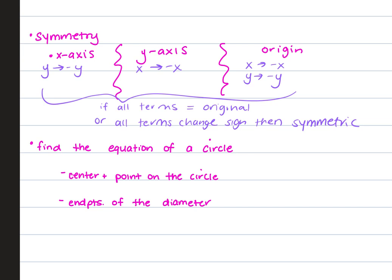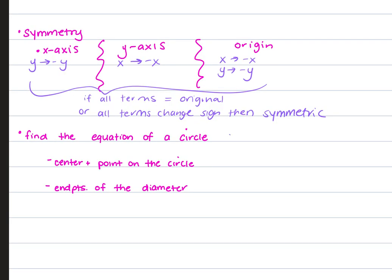So your x intercepts, we plug 0 in for y. And your y intercepts, we plug 0 in for x. Make sure these are in coordinate point form. You're not listing these. These need to be in coordinate point form. Then came symmetry. So to test for x-axis symmetry, we make y negative y. For y-axis symmetry, we make x negative x. And for origin, we change both. x becomes negative x, y becomes negative y. We simplify and compare. If all terms equal the original or all terms change sign, then it's symmetric to whichever test you did.